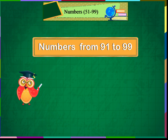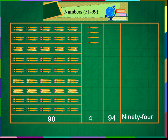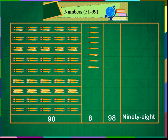Numbers from 91 to 99. 90 and 1 makes 91. 90 and 2 makes 92. 90 and 3 makes 93. 90 and 4 makes 94. 90 and 5 makes 95. 90 and 6 makes 96. 90 and 7 makes 97. 90 and 8 makes 98.